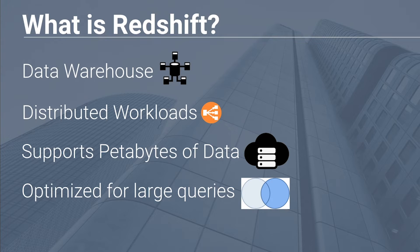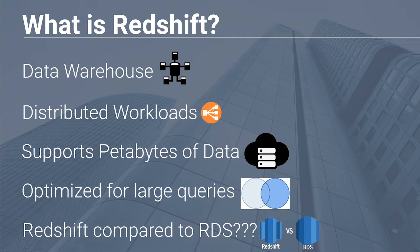What Redshift will actually do is that if you have some regularly performing queries, it'll optimize your database for those particular queries so that it can respond quicker to them. Compared to RDS, Redshift is more suitable for analytics, BI, and data mining style queries, whereas RDS is better suited for smaller queries that take place on a more frequent basis.